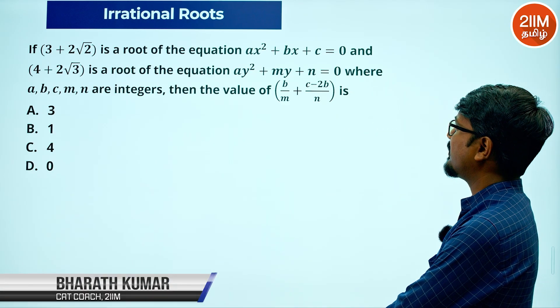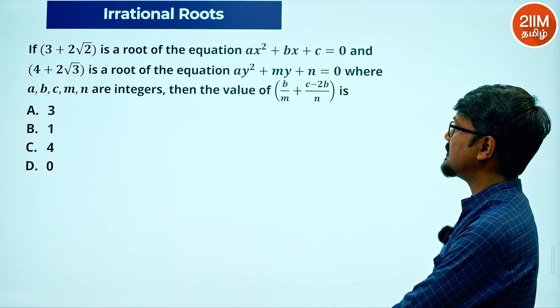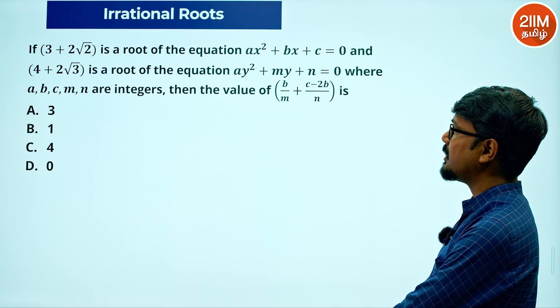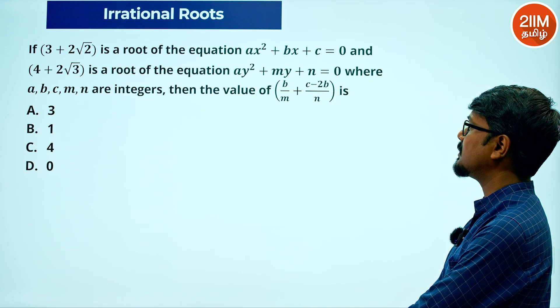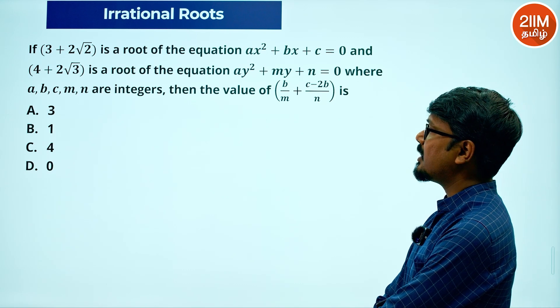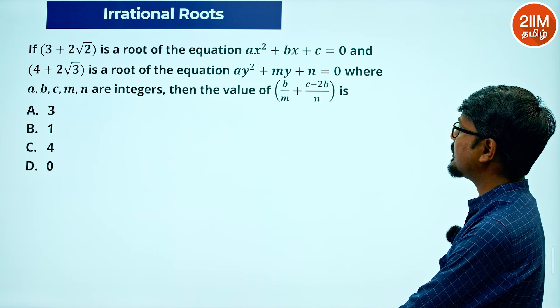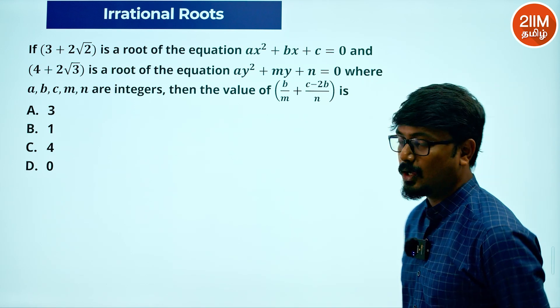If 3 plus 2 root 2 is the root of the equation ax squared plus bx plus c equals 0, and 4 plus 2 root 3 is the root of the equation ay squared plus my plus n equals 0, where a, b, c, m, n are integers, then the value of b by m plus c minus 2b by n is...